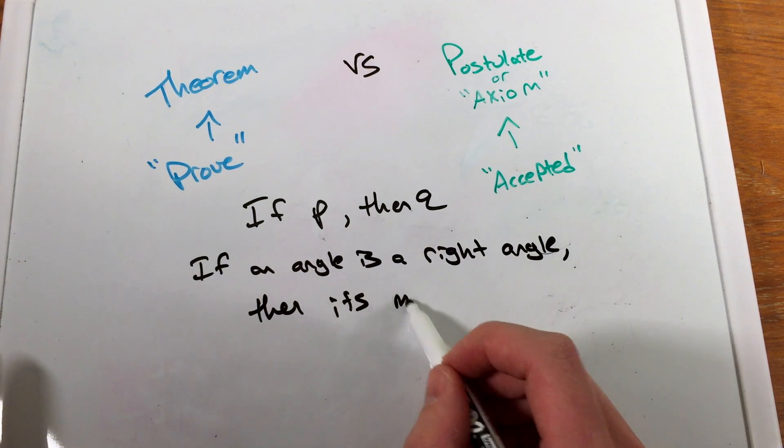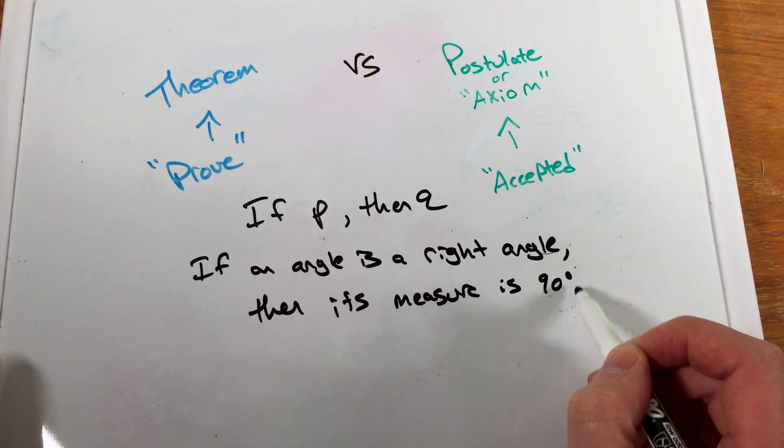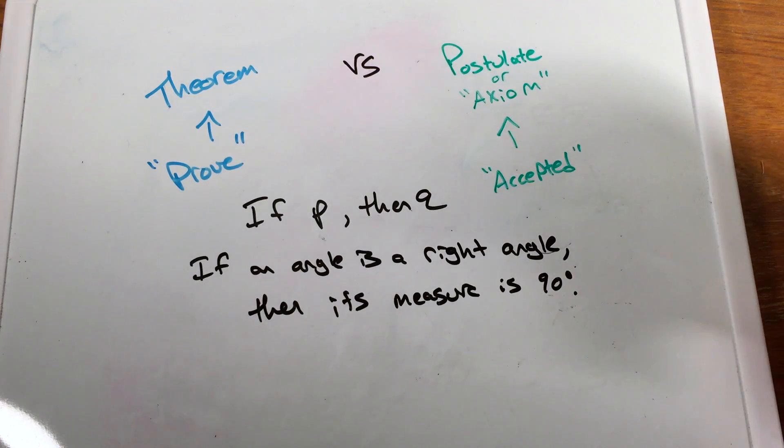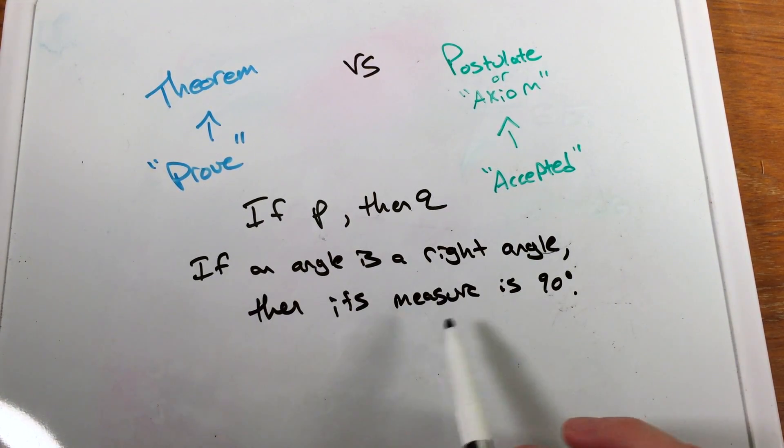then what do we know about it? Then its measure is 90 degrees. This is just an if-then statement. And so, most theorems and postulates will be written in this if-then form, that if an angle is a right angle, then its measure is 90 degrees.